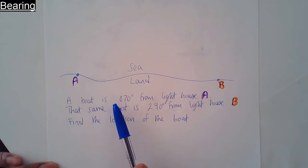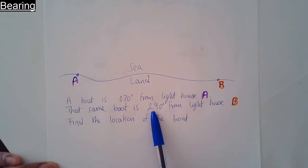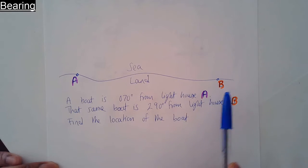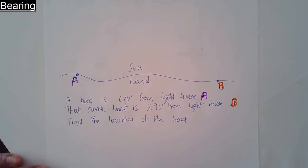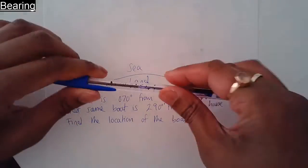A boat is 070 degrees from lighthouse A. Remember, bearing has to be three digits. That same boat is 290 degrees from lighthouse B. Find the location of the boat and mark it with a cross.